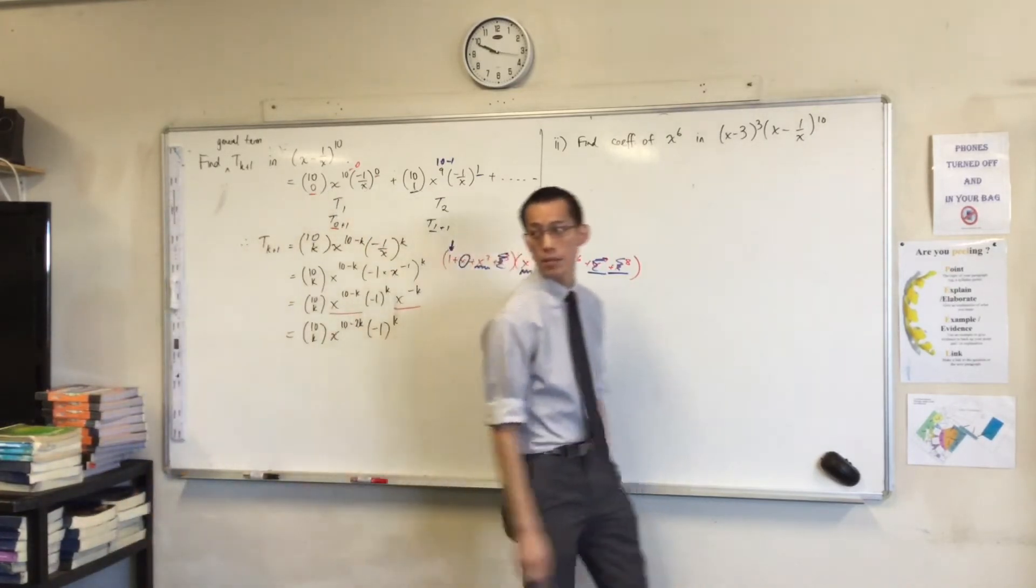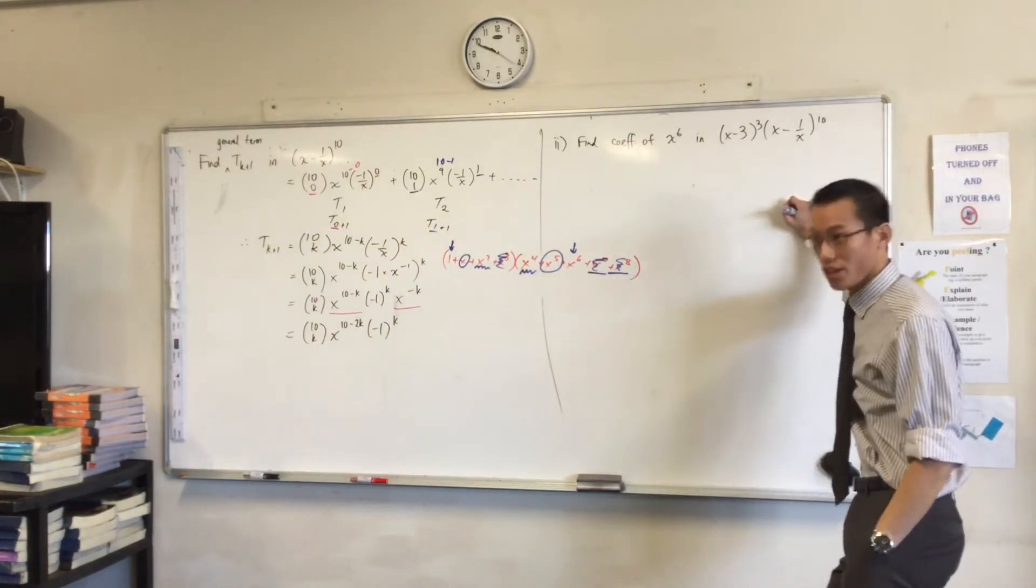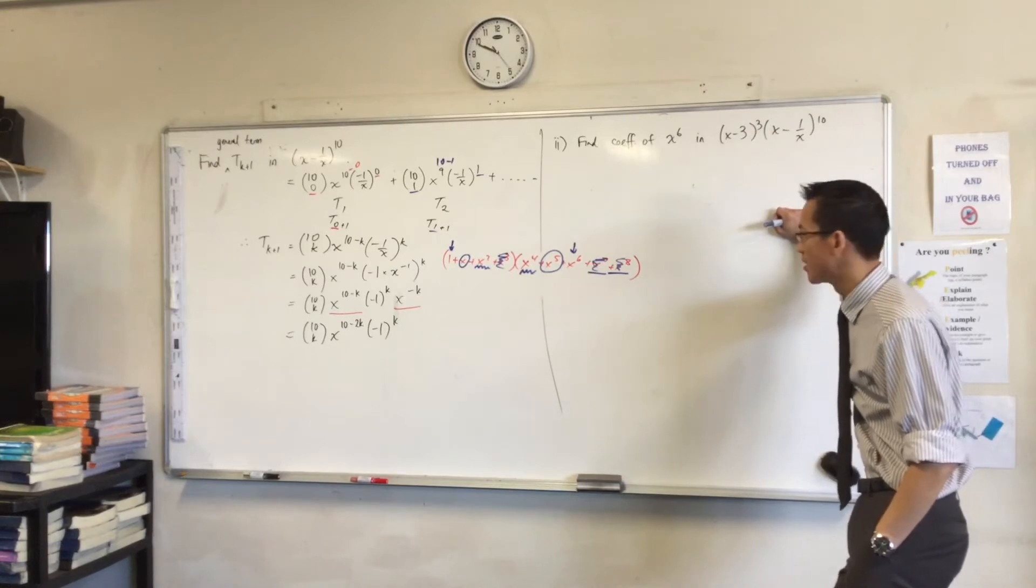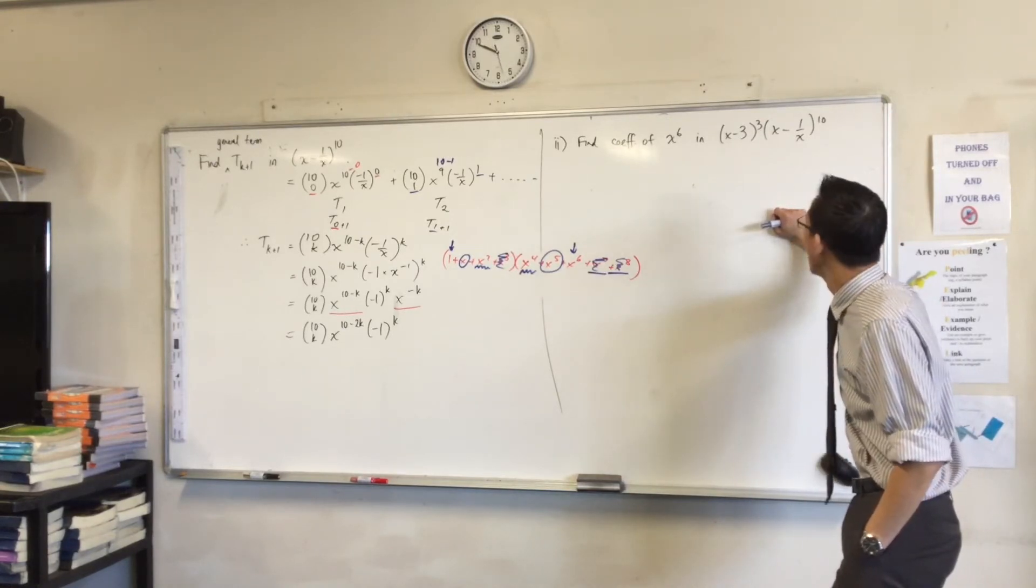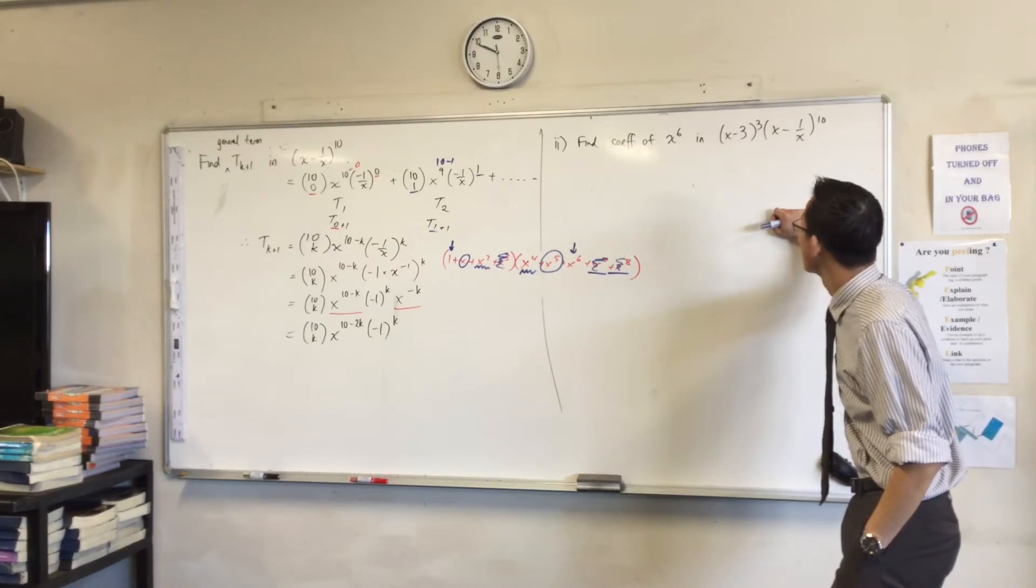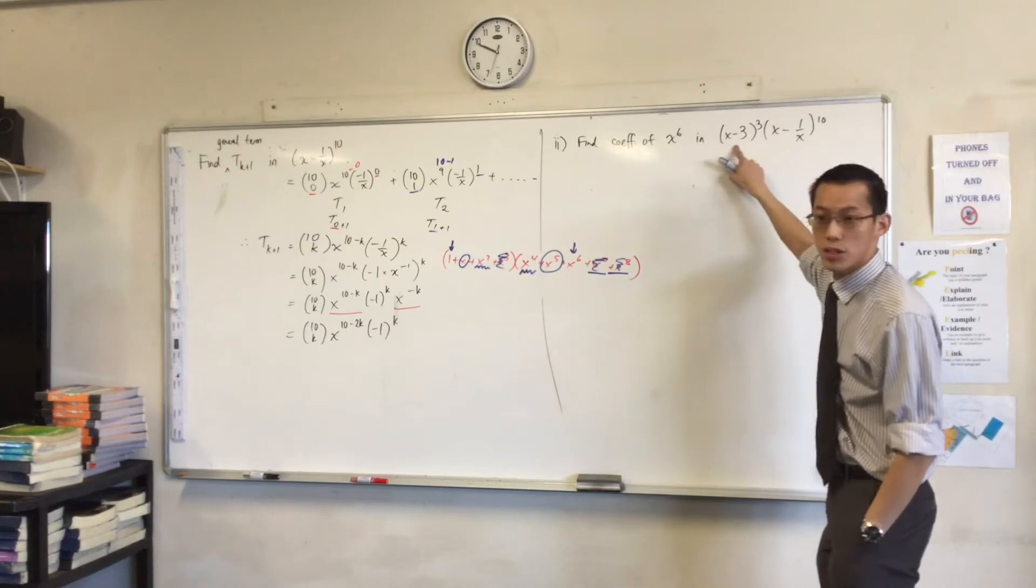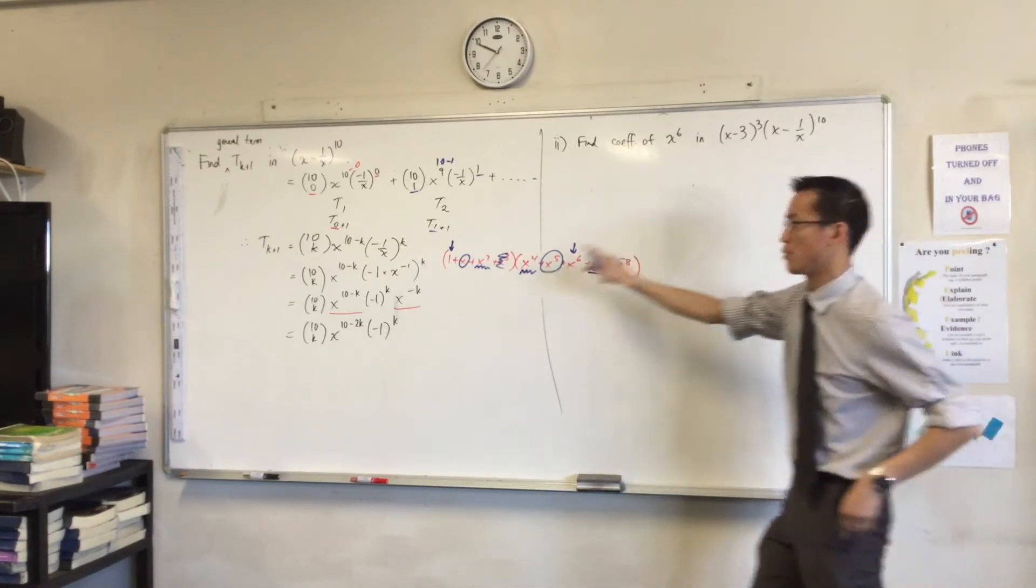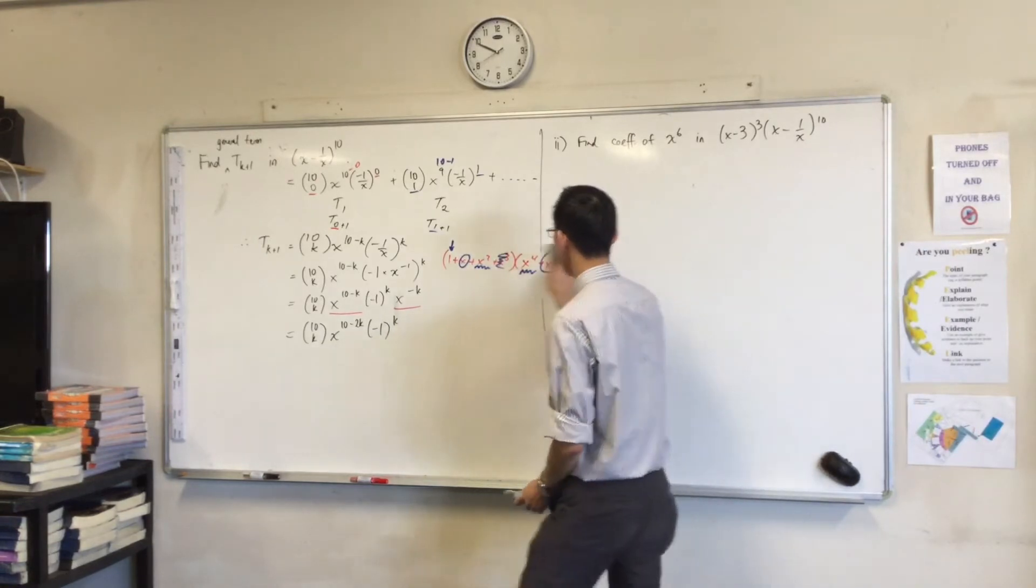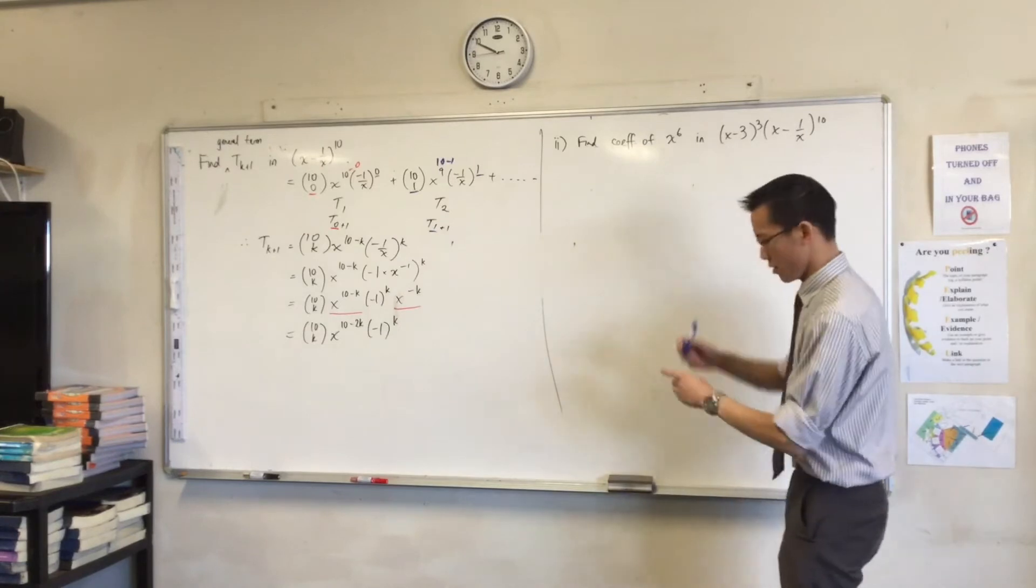The same thing happens here. So we just have to work out which of these terms will give me an x to the 6. So the way that I would think about this is, out of this, this part here is small enough that you can think about it on its own. This part is not. That's why it was separated out to be its own question. But let's actually start working on this from the beginning.